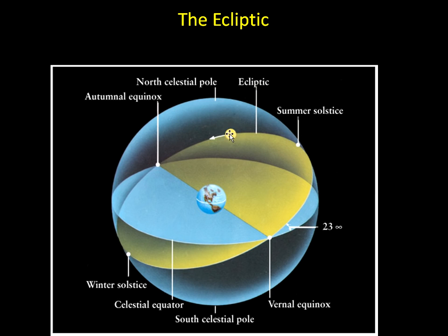The ecliptic is the path that the sun appears to take. Of course, that's due to the Earth's motion around the sun. But to us, if we think of ourselves as stationary, it looks like the sun is orbiting us.